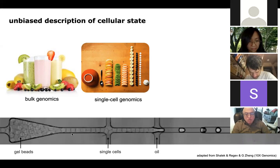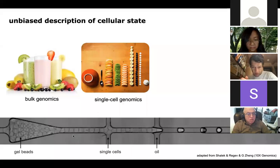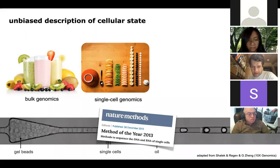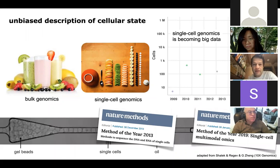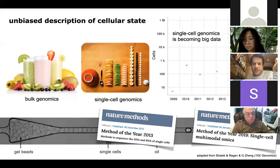With advances in microfluidics, you can capture cells in small water droplets, lyse them, analyze them, and barcode them jointly, then sequence them to get large-scale RNA-seq output. This was denoted method of the year, and the multiomics version method of the year again, just last year in Nature Methods. When the first papers came out in 2009 it was just a bunch of cells, but now we process tens or hundreds of thousands of cells. It's become one of those big data disciplines.